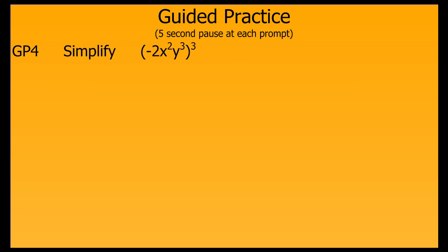What's different in this example? It's a power of a product. We raise each factor within our product to that power, then simplify using our properties. Negative 2 to the third power gives us negative 8. Then with our variables, we use our power of a power property and multiply the exponents for like bases. Now we simplify. This is simplified form.